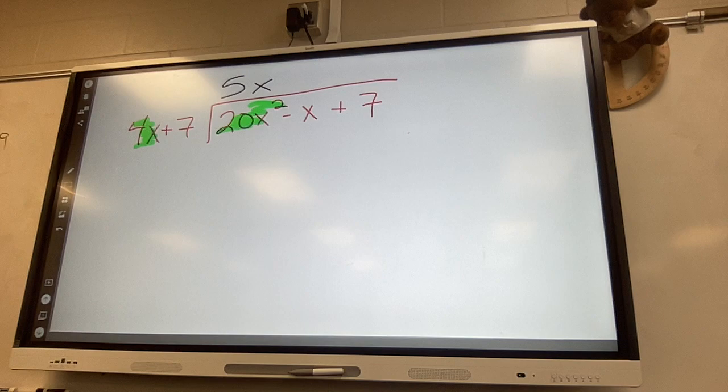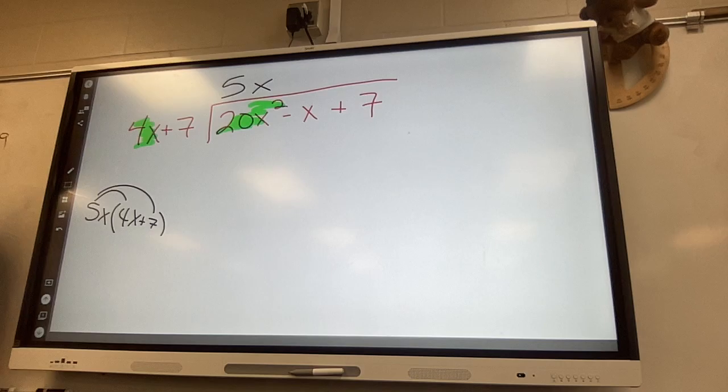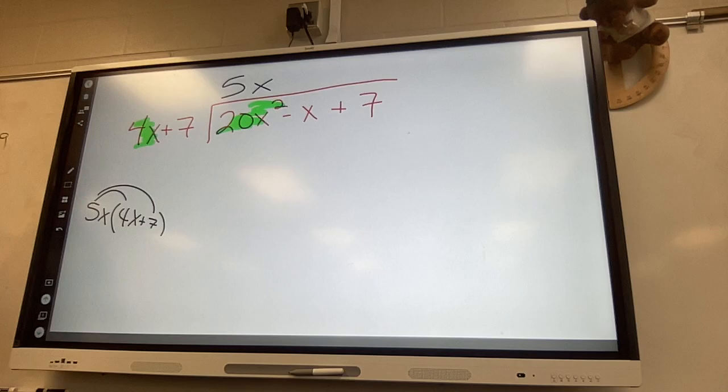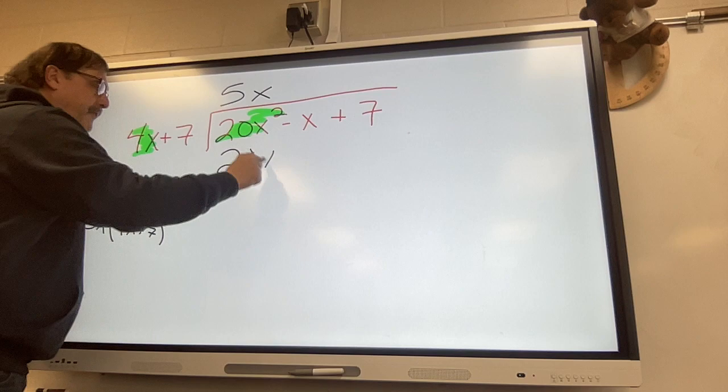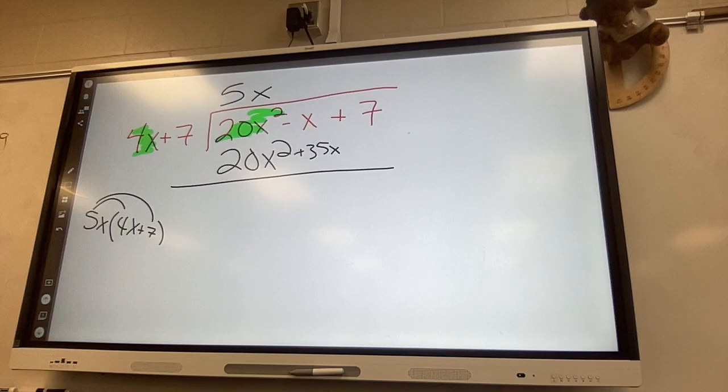Then you could go to the side if you would like and write 5x times 4x plus 7 and do distributive property you absolutely may do that. Or you may do it sort of this way sort of in your head. 5x times 4x is 20x squared. 5x times 7 is 35x draw a line.